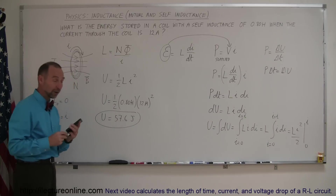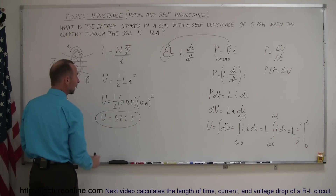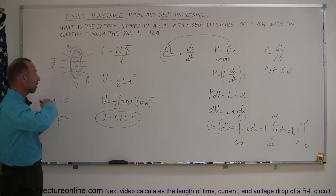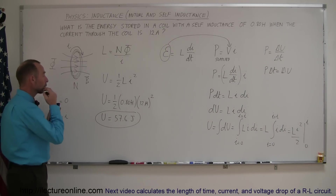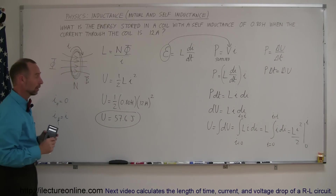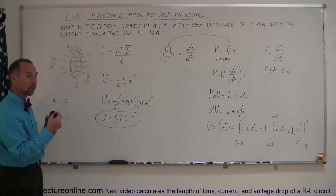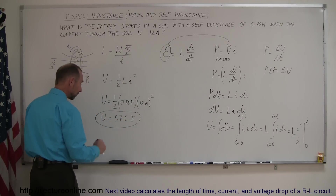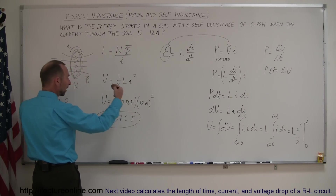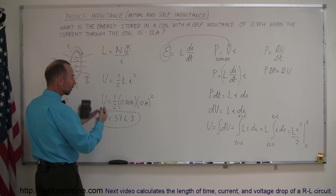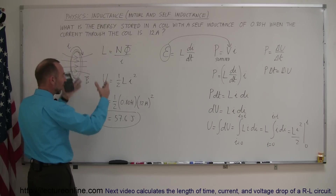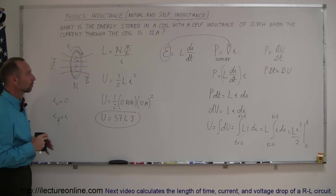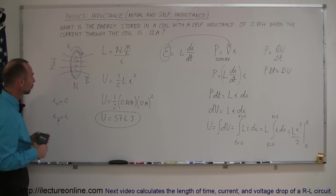While there's a current of 12 amps going through our coil that has a self-inductance of 0.8 henries, there is at that moment 57.6 joules of energy stored in it. As long as the current continues at 12 amps, that energy stays there. When the current begins to decrease, the energy will come back out of the coil and go back into the circuit. When the current builds up, energy builds up into the coil; when the current goes down, the coil releases that energy. That's a nice example of how to calculate the energy stored in a coil.